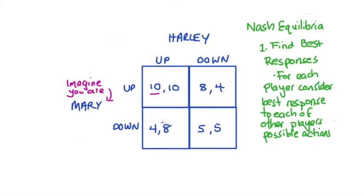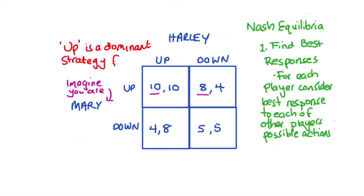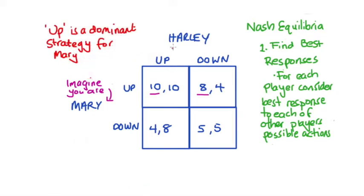Now we switch to Harley's other possible move, which is down, so we'd be on this column here. If Mary goes up she'll get eight and if Mary goes down she'll get five, so again up is the best response. Since up is the best response for Mary regardless of what Harley does, then up is what we call a dominant strategy for Mary. To repeat: for all of Harley's possible actions — up or down — up is Mary's best response, and this makes up a dominant strategy for Mary.